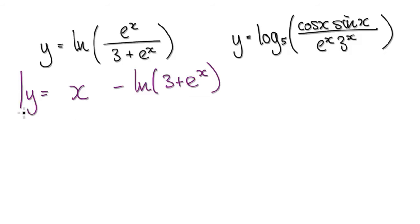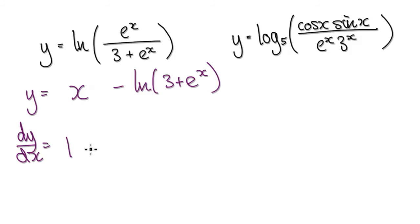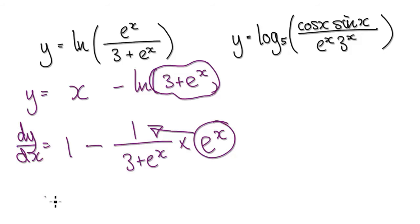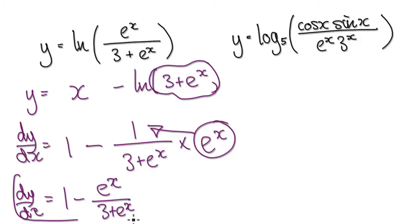So now you're ready to differentiate. dy by dx equals — if you differentiate the x term it would be 1. Take away, and then imagine this is a bubble. When you differentiate log of a bubble it would be 1 over the bubble, times the derivative of the bubble itself. Differentiating 3 gives 0, and differentiating e to the power of x gives e to the power of x. So that multiplies to the top, giving 1 minus e to the power of x over 3 plus e to the power of x. This is your dy by dx — this is your answer.